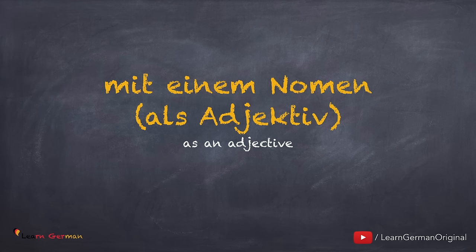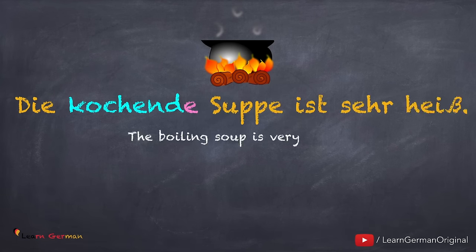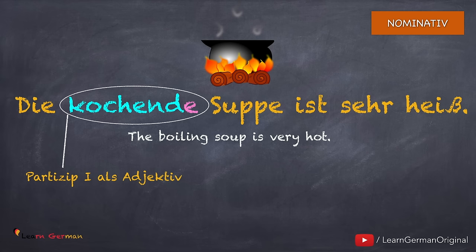Partizip 1 kann auch als Adjektiv benutzt werden, zusammen mit einem Nomen. Zum Beispiel: Die kochende Suppe ist sehr heiß. Hier ist kochende die Partizip 1 Form von dem Verb kochen. Die kochende Suppe ist das Subjekt, also ist es Nominativ.